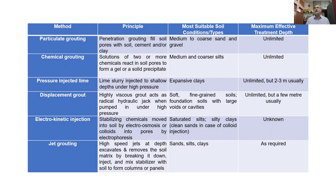This is a comparative table and chart of the grouting methods. The headings are: method, principle, most suitable soil conditions, types, maximum effective treatment depth. For particulate grouting — penetration grouting — the principle is to fill soil pores with soil, cement, and/or clay. It is suitable for medium to coarse sand and gravel, and the effective treatment depth is unlimited.